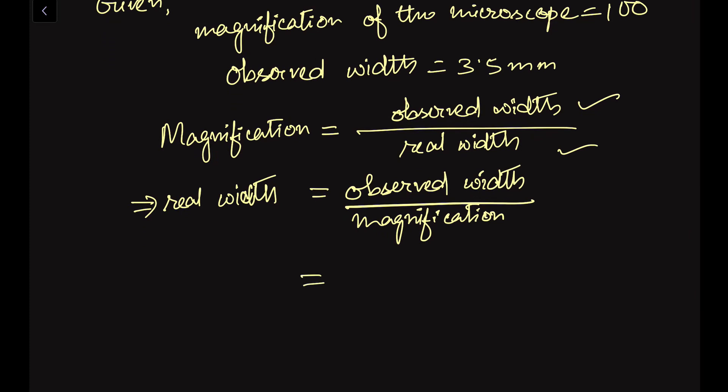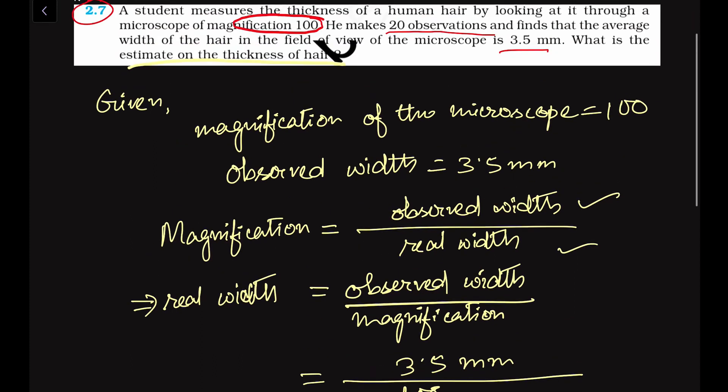Using this formula we can find out the real width. So observed width is 3.5 millimeters and the magnification is 100 times, so the real width will be 0.035 millimeters. So this is the actual width of the human hair. This is the solution of problem number 2.7.